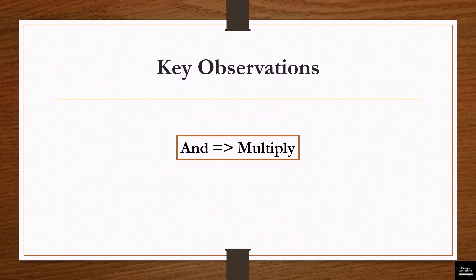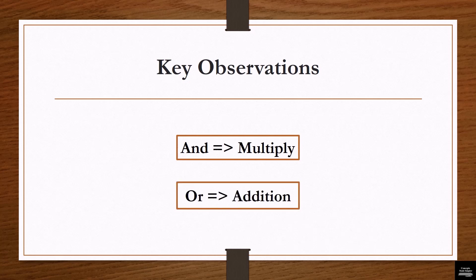Key observation: if both events are linked with AND, then you perform multiplication. But if both events are linked with OR, then you perform addition. For example, if you need to wear a pair of jeans AND a pair of shoes AND a shirt, all three events are linked with AND. Since all three events need to happen simultaneously, you multiply the number of ways each event can occur.